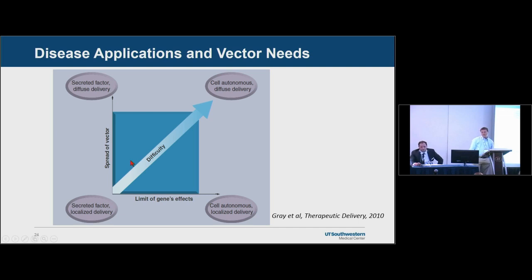A question about persistent expression in the eye: there's persistent expression for years but then a loss of expression after approximately three to six years. This is a complicated question. You could get silencing of the promoter. You could also have a situation where with intraparenchymal injection in the eye, you're treating one area of the retina, and in a degenerative disease, the one small treated area remains healthy while the surrounding area continues to degenerate. We don't really know what that looks like long term — it may be a degenerating environment impacting the neighboring healthy area, or one of a dozen other explanations.